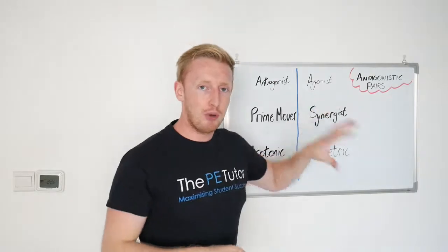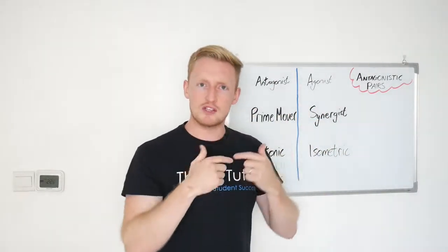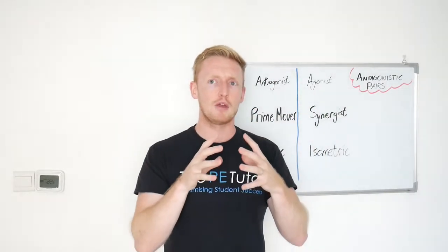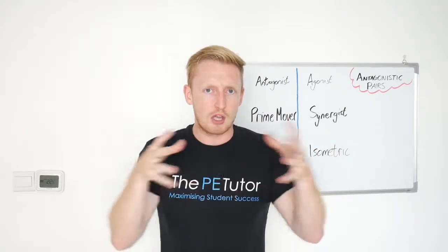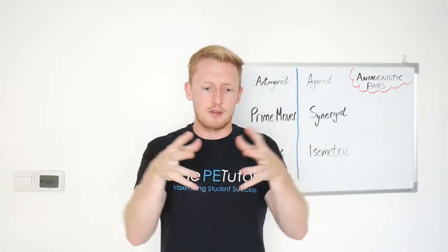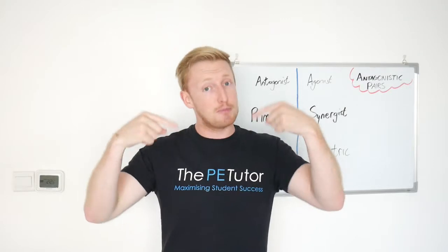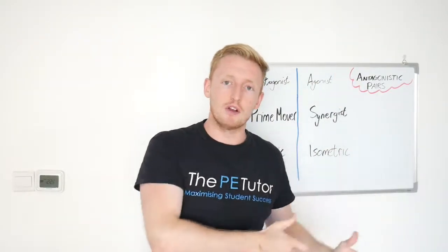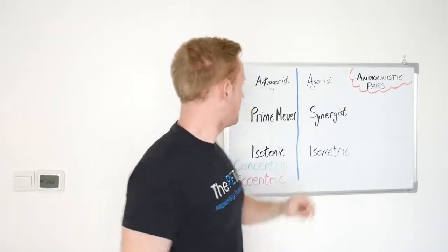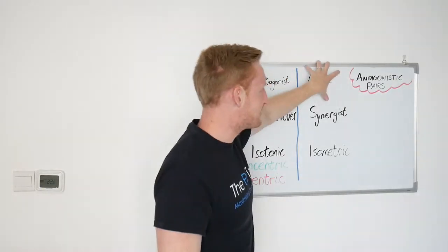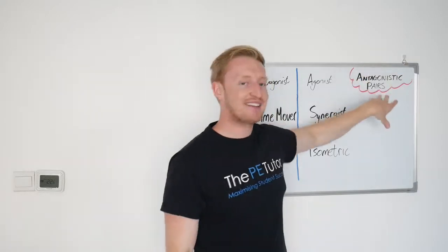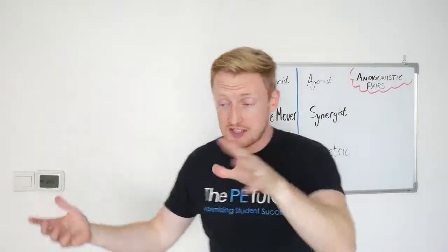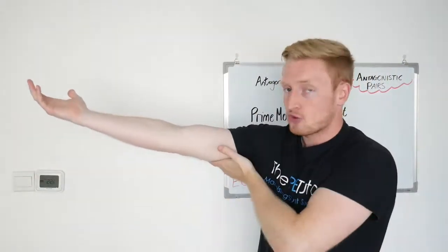If a muscle can only ever pull, that means once it reaches its fully contracted length, how is it ever going to go back to the position it came from? Well, it needs a partner. It needs another muscle to pull the bone in the reverse action to reset it. So we have an antagonist and an agonist. That makes up the antagonistic pair. A nice simple one would be the bicep and the triceps.